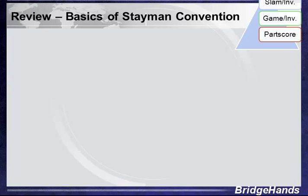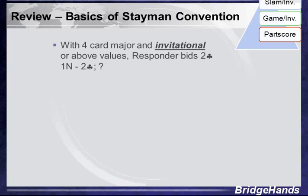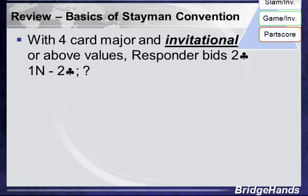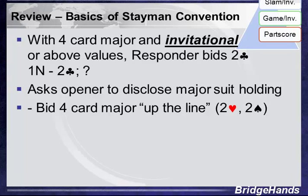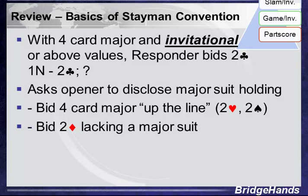Since most people who play Jacoby transfers already play Stayman, let's do a quick review to compare the two conventions. With Stayman, partner has opened one no trump and responder holds a four-card major with invitational values — typically eight or nine points or more — and bids two clubs. The opener then discloses a major suit: two hearts with four hearts, two spades with four spades but not four hearts, two hearts with both majors, or two diamonds lacking a four-card major.